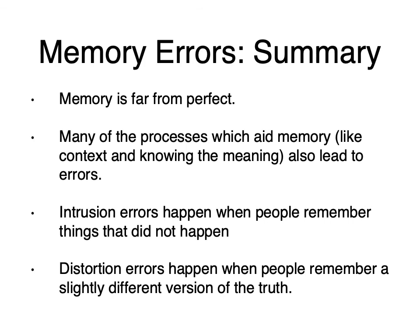That's what I meant at the beginning of this lecture: a lot of times these errors seem like mistakes, but they're really an example of our memory working the right way. Intrusion errors happen when people remember things that just didn't happen, and distortion errors happen when people remember a slightly different version of the truth.